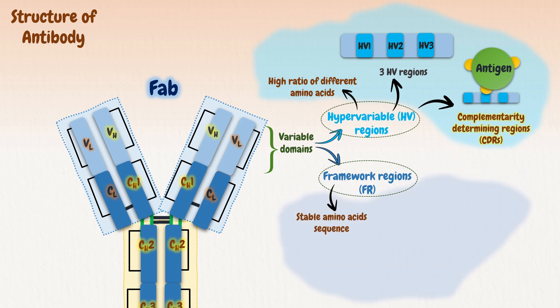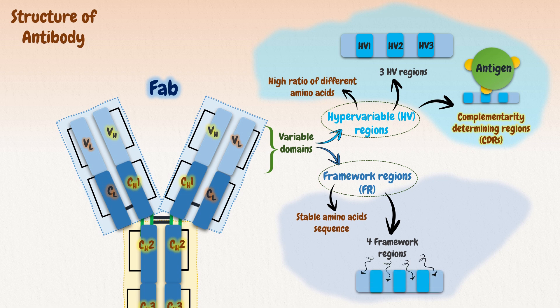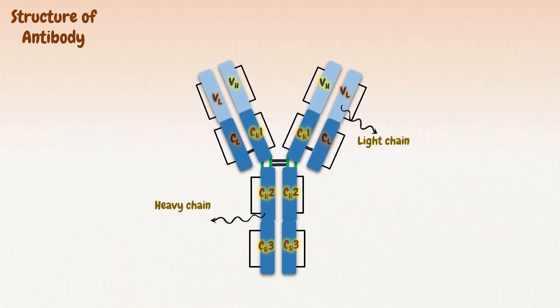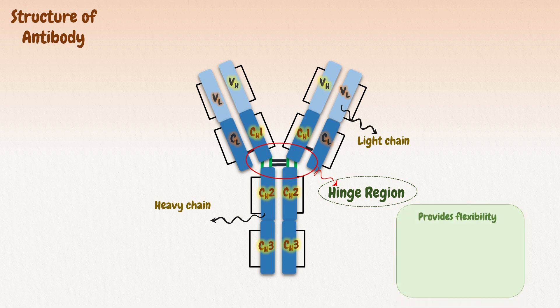Framework (FR) regions are those that have a more stable amino acid sequence. Four FR regions are present in the variable domain, separating the HV regions. The FR regions form a beta-sheet structure which serves as a scaffold to hold the HV regions in position to contact antigen. Between the CH1 and CH2 domains of the heavy chain is a region containing several prolines, making this part of the molecule quite flexible — it is therefore known as the hinge region, which provides flexibility to the antibody structure, helping in having high affinity for antigens.